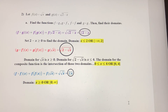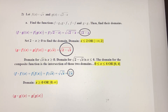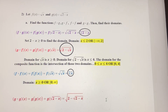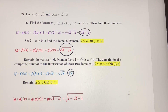Finally, g of g. I take this function and plug it in for x, giving me g of the square root of 2 minus x. When I plug that in, I get the square root of 2 minus the square root of 2 minus x. There's nothing further to simplify, so that's our answer.